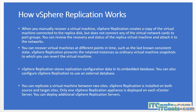VMware Replication appliances store configuration data in a VRA database, which is an embedded database in the appliance itself; however, an external database can be used if needed. You can replicate a VM between two sites, but unfortunately multi-site targeting is not possible for a single VM — meaning a single VM cannot be replicated to more than one site. I will demonstrate this in an upcoming video in this series.